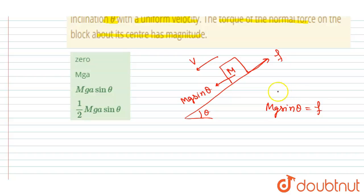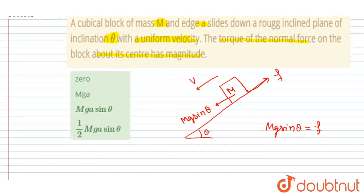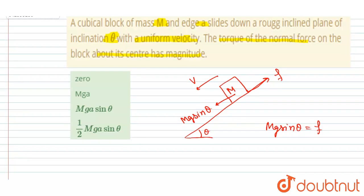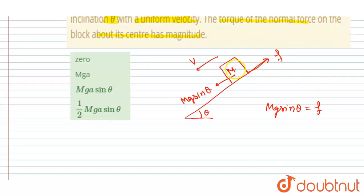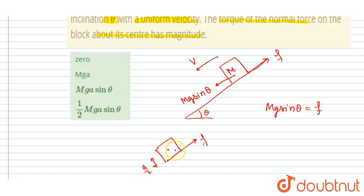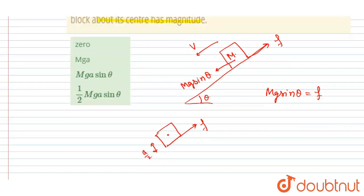The question asks for the magnitude of the torque of the normal force about the center. If you consider the center, there is no net torque of any force about the center. Drawing the block, the friction force is acting at a distance of a/2 from the center. The perpendicular distance is a/2, so there should be some torque due to the friction force, which must be balanced by some other force.